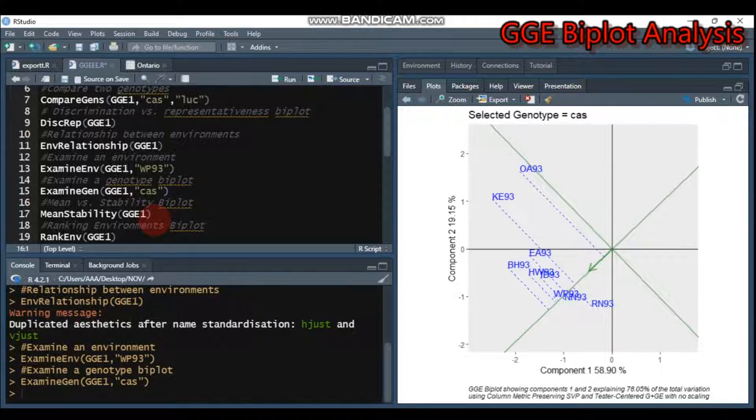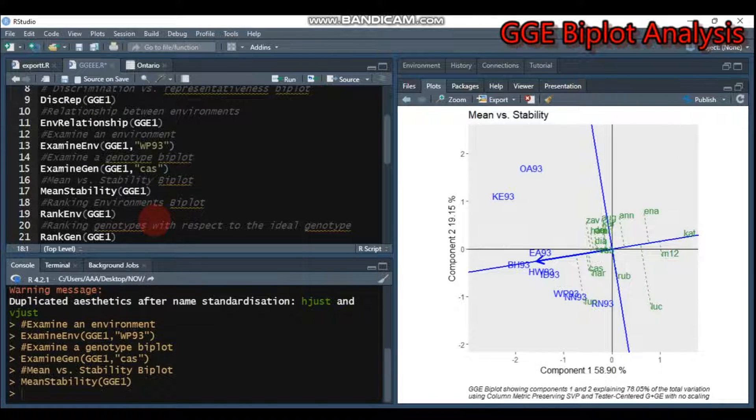If you want to display mean versus stability, you have to use the mean.stability function, then write the model. Our model is GGE1. Type this and send to R Studio, and you can get the mean versus stability biplot.